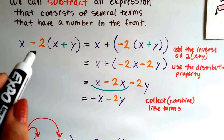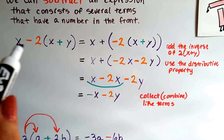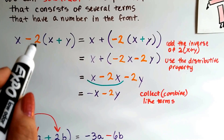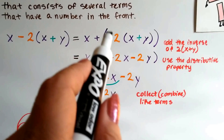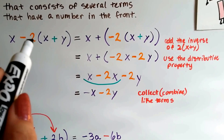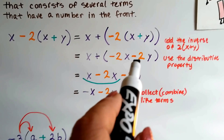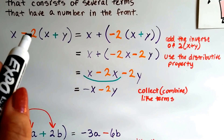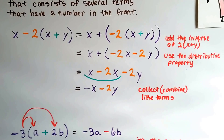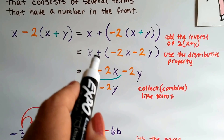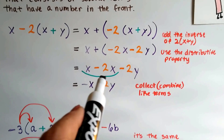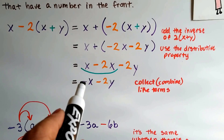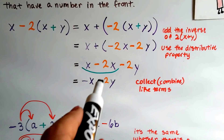Now we do it with the negative 2. We have x minus negative 2 times x plus y in parentheses. We take this negative 2 and distribute it: negative 2 times a positive x becomes negative 2x, and negative 2 times a positive y becomes negative 2y. Now we've got x plus negative 2x minus 2y. Combining like terms: x take away 2x gives a negative x, so we end up with negative x minus 2y.